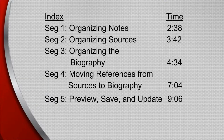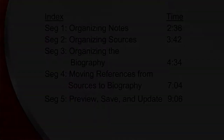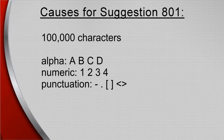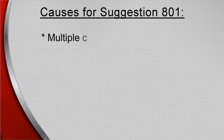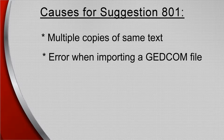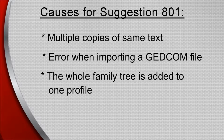This index lists beginning times of each segment so you can fast forward to any of particular interest. Suggestion 801 is caused when a profile has over a hundred thousand characters. These are very long biographies and could be simplified. Specific problems are multiple copies of the same text, error when importing a GEDCOM file, or the whole family tree is added to one profile.